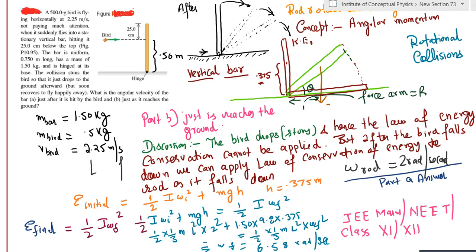All right, so let's do part B of this numerical, which is: what is the angular velocity of this rod when it strikes the ground? Now you have to be very careful. A lot of people get tempted and say we will apply law of conservation of energy. We know the bird's velocity, so the energy of the bird is half mv squared.